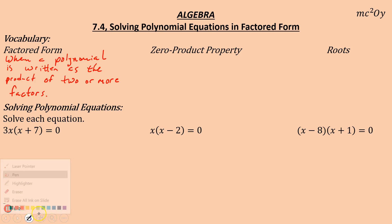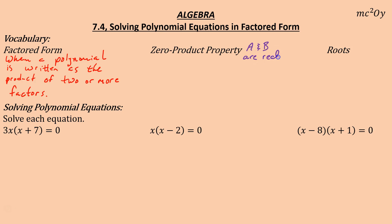We put things in factored form so that we can apply the zero product property. The zero product property says: when A and B are real numbers — numbers you're used to using, not imaginary — if A times B equals zero, then A has to equal zero or B has to equal zero. In other words, if you're multiplying two things together to make zero, one of those two things must be zero.